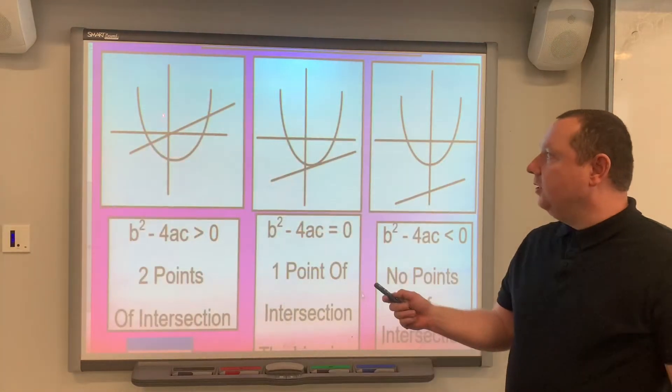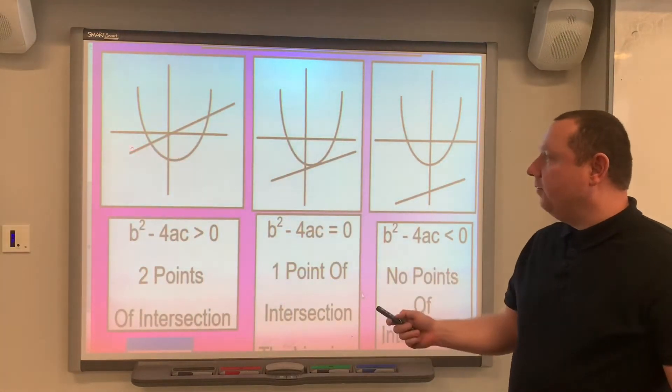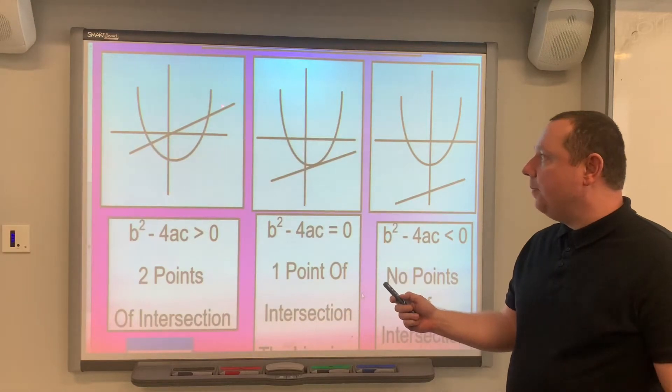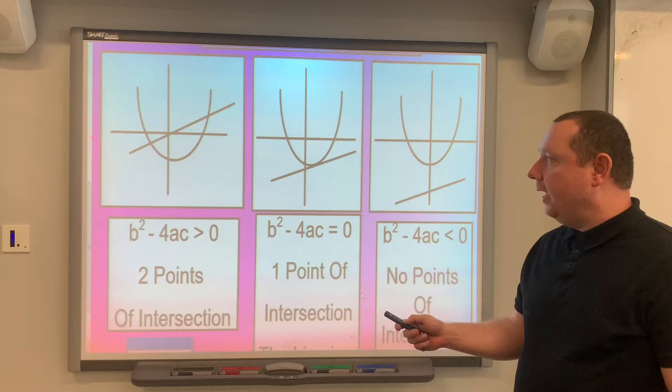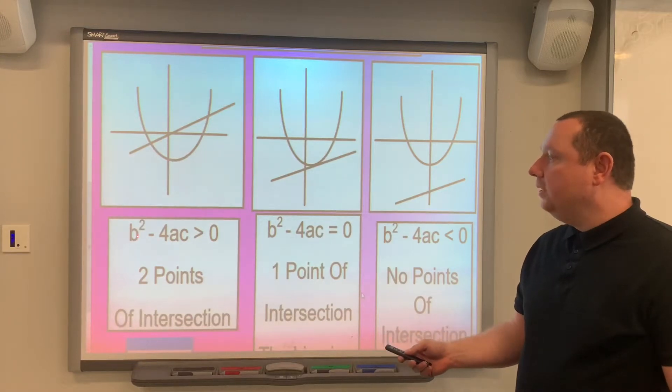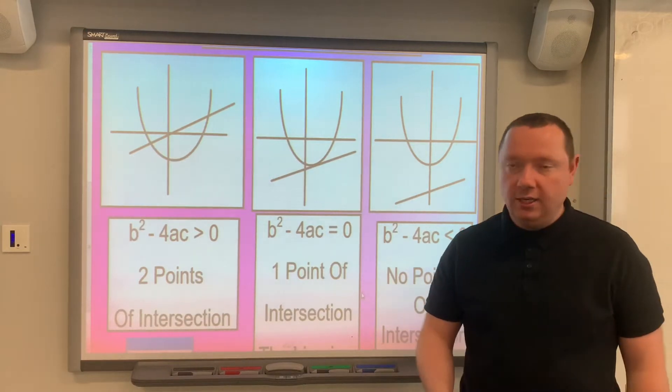So if we solve them simultaneously, three things can happen. Either the line touches the parabola at two points. In that case, the resulting quadratic we get, b squared minus 4ac (the discriminant), must be greater than zero. It will tell you there's two points of intersection.